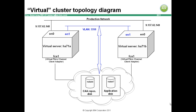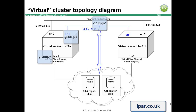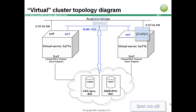The CAA disk can be physical or virtual. In my example it is virtual. In fact both LUNs are presented using n-port virtualisation technology. The application I shall be clustering today is a simple C application called Grumpy. Grumpy is available to download in LPP format from my website lpar.co.uk, but I stress, do not run Grumpy on your production servers.